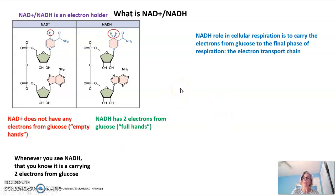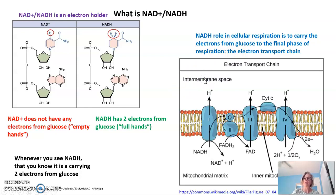So the role of NADH in cellular respiration is to carry the electrons from glucose to the final phase of respiration, the electron transport chain, which is in the inner membrane of the mitochondria. So here you can see NADH, which is picking up some electrons from glucose. It's bringing electrons to the final phase, which we will talk about in a future video.